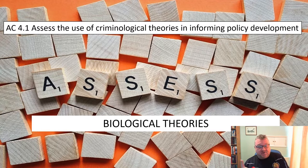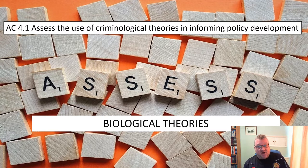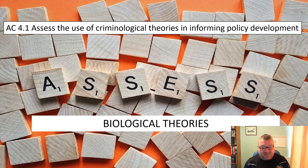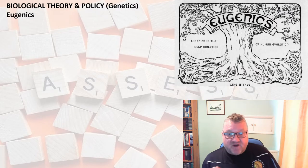We're going to look at how biological theories inform policy, how individualistic theories do it, and how sociological theories do it — there are three separate PowerPoints for each. We're starting with biological theories. I've picked some policies used in the world today that have their roots in biological theories, and the first policy is eugenics, which is linked to genetic theories.